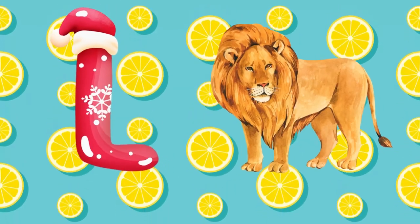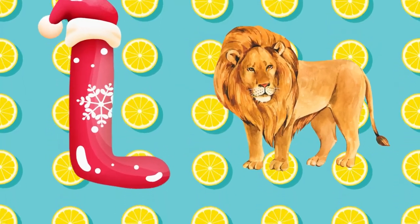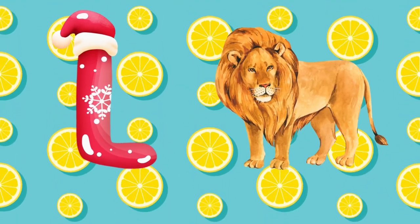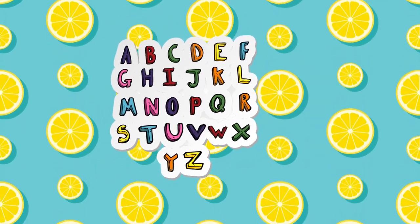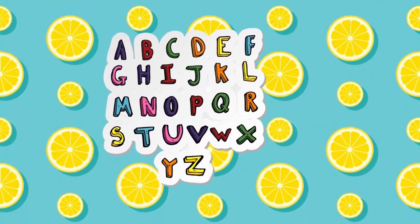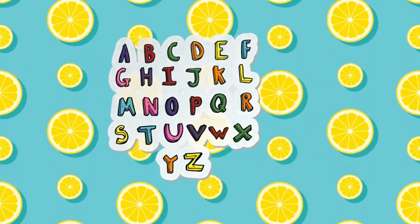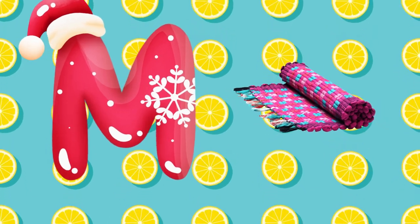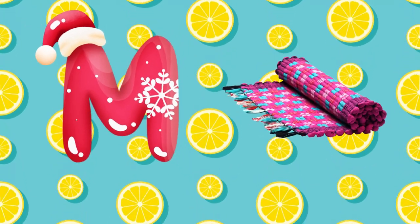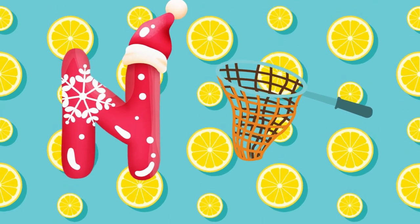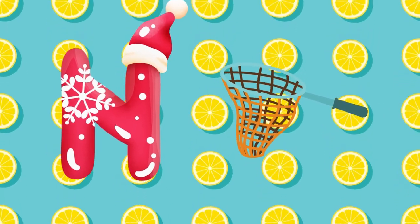L is for lion, l-l-lion. M is for mat, m-m-mat. N is for net, n-n-net.